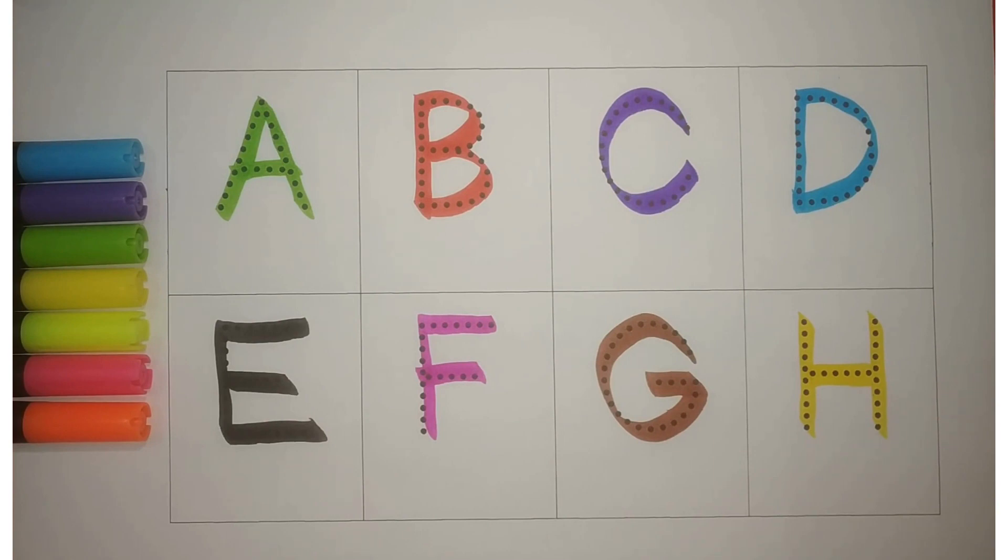Let's revise, chalo phir se kerte hai. A, green, A for apple. B, red, B for ball. C, purple, C for cat. D, blue, D for dog.